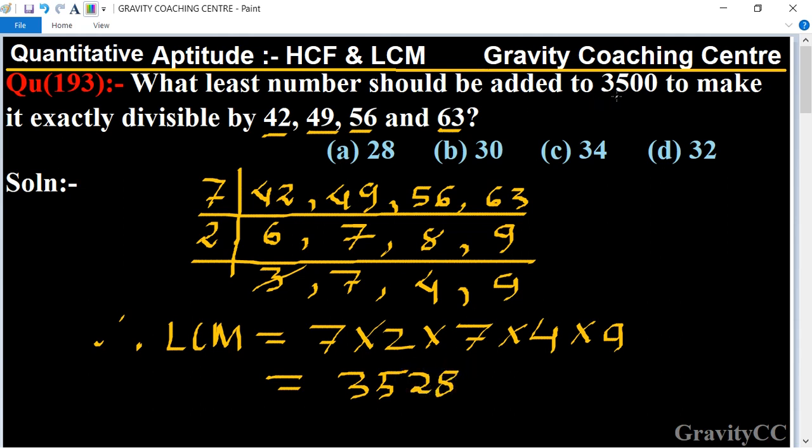According to the question, what should be added to 3500 so it is exactly divisible? We can